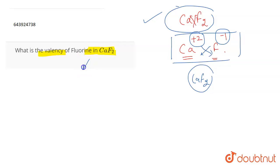So the valency of fluorine is minus one in CaF2. Otherwise, if you know it directly, then you can simply write the answer as minus one without even doing this exercise, because if you know that fluorine has a valency of minus one, it is very easy.